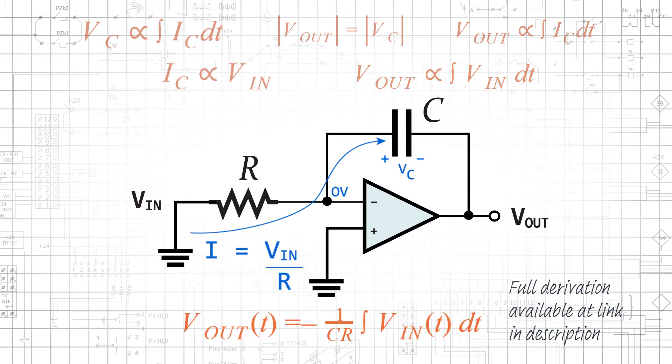The full derivation is available at the link in the description. In summary though, the output voltage of the op-amp integrator is proportional to the negative integral of the input voltage, and the constant of proportionality is the feedback capacitance multiplied by the input resistance.